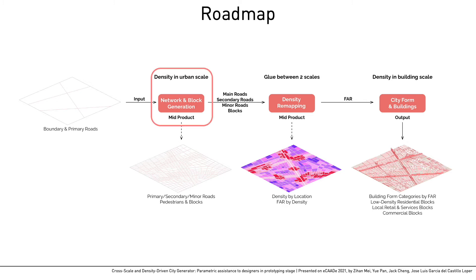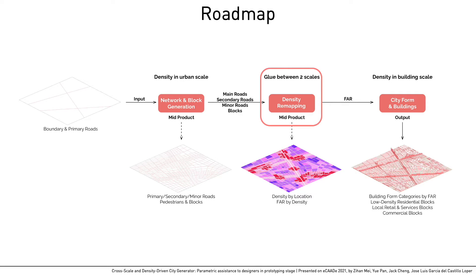The first step generates road networks and blocks with density variation across the district. Its parameters allow the choice between rigid and organic grids and the disparity between highest and lowest density. The second step connects the density in both scales, remapping the distance between blocks and roads to a reasonable FAR for the third step. It contains weighted parameters and the remapping index for the overall FAR distribution.